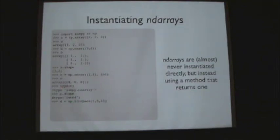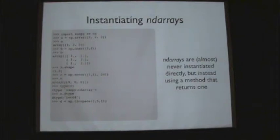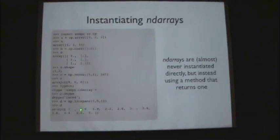Linspace generates an array going from 1 up to 5 inclusive, with 11 points in between — the spacing is fixed. There's a corresponding 'np.logspace' for logarithmically spaced arrays.